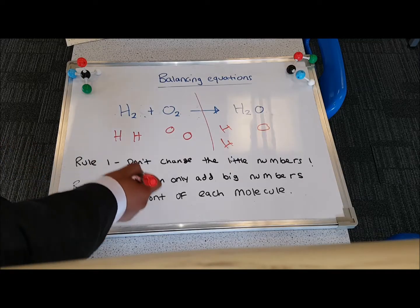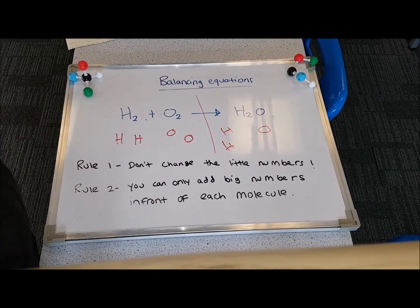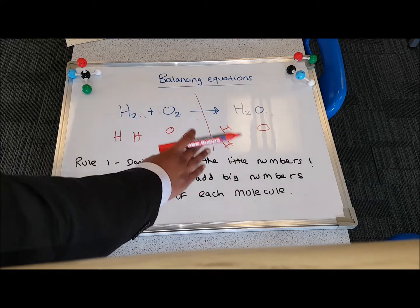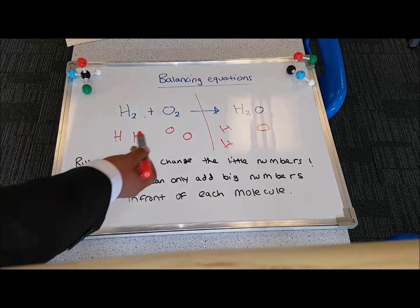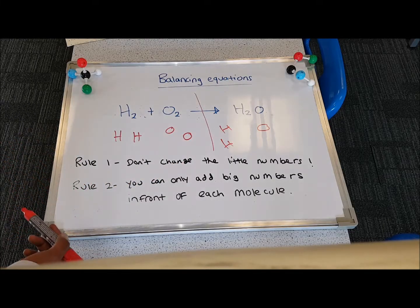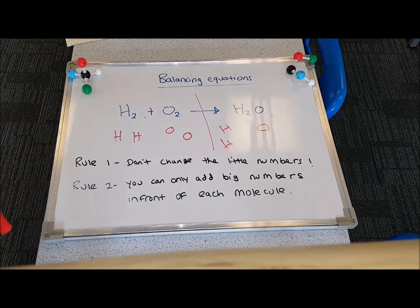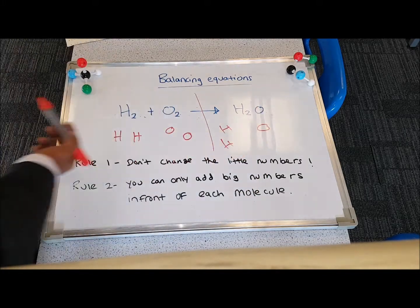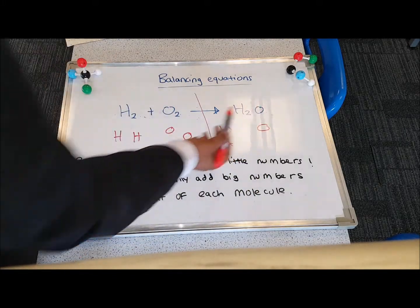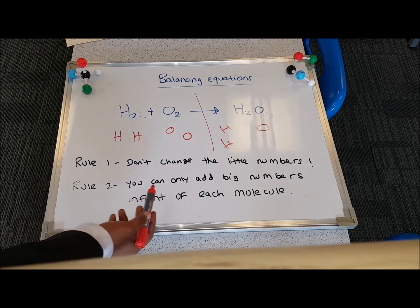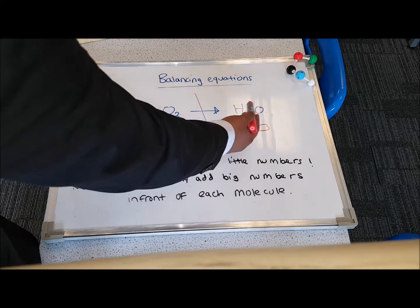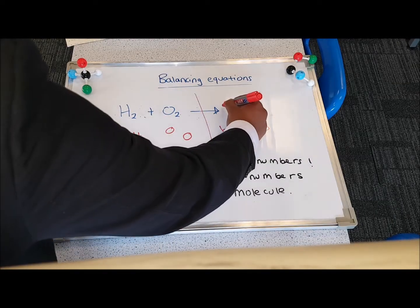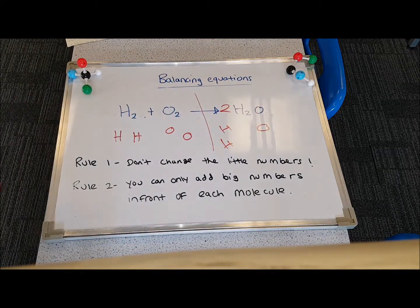So, now that we know our two rules, let's balance this equation. We have two hydrogens on the left, two hydrogens on the right, so I'm going to leave the hydrogens alone for now. We have two oxygen atoms on the left, but only one on the right. Now, remember what I said, you can't change the little numbers or add them on, so I can't put a two where the oxygen is. So I have to only add a big number in front of this molecule of water. To balance the oxygens, I put a big two over here.